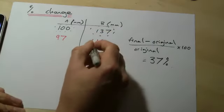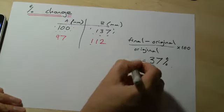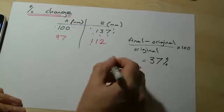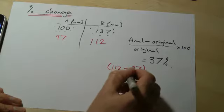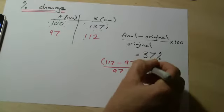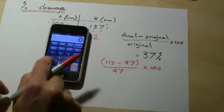Same idea. Final 112, minus the original 97, we divide that by the original value, multiply it by 100 to get our value. So let's see what we get this time.